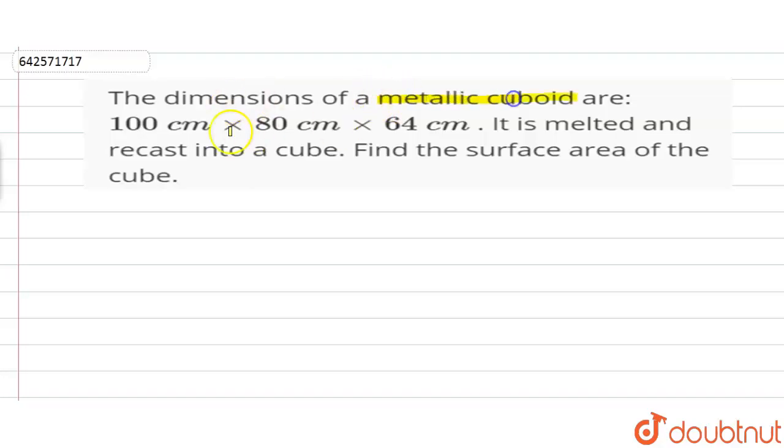So we are given a metallic cuboid and its dimensions are these. It is melted and recasted into a cube, so we have to find the surface area of the resulting cube.